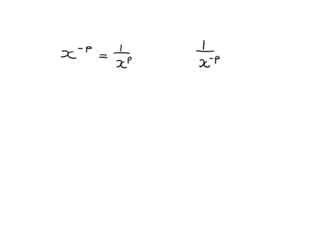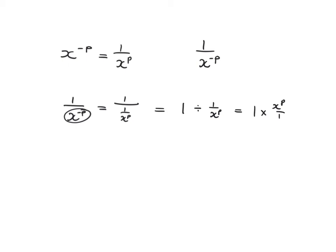Now what happens when we've got 1 over x to the minus p? We know that x to the minus p just means 1 over x to the p. So we're saying 1 divided by 1 over x to the p. Remembering our rules for fractions, it's going to be 1 times x to the p over 1, which is just x to the p. So 1 over x to the minus p is just x to the p.